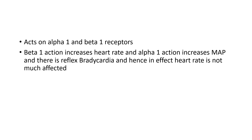Coming to the pharmacology — noradrenaline acts on alpha-1 and beta-1 receptors. The beta-1 action increases heart rate and the alpha-1 action increases mean arterial pressure, which leads to a reflex bradycardia. The net effect is that the beta-1 and alpha-1 actions are balanced, so the heart rate is not much affected. Basically, noradrenaline is a vasopressor.